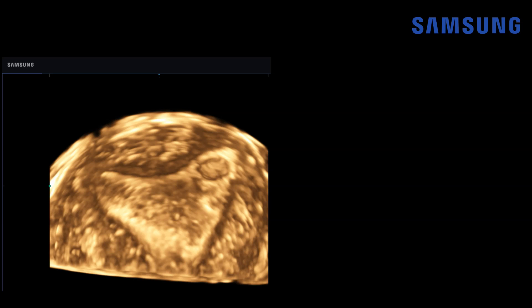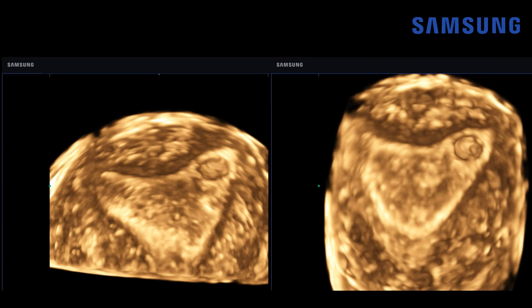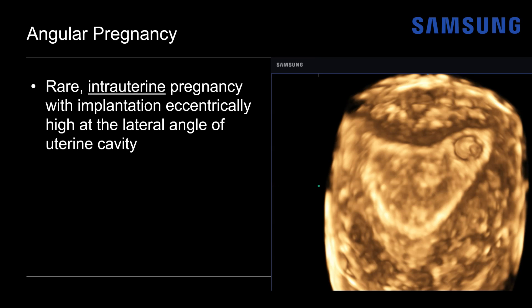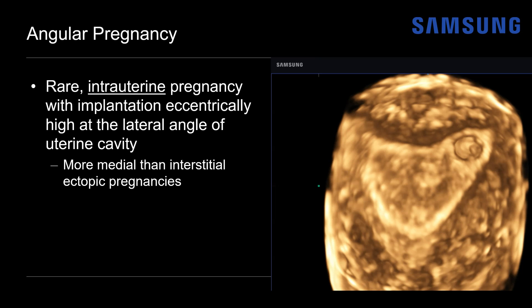What can be quite helpful is to generate 3D reformatted images. Here we have a coned-down view of the uterine fundus looking at the endometrial cavity, and we can see that this gestational sac is laterally and eccentrically located within the endometrial cavity — but it is an intrauterine implantation. A slightly angled view again shows the gestational sac at the angle of the uterine cavity. This is known as an angular pregnancy — an intrauterine pregnancy with implantation eccentrically high at the lateral angle of the uterine cavity. Angular pregnancies are more medially located than interstitial ectopic pregnancies, which are located where the interstitial portion of the fallopian tube would be.